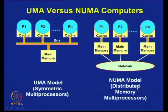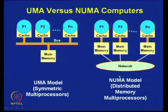On the other hand, there is another model known as the NUMA model. NUMA stands for non-uniform memory access. In this NUMA model, you have separate processors and the memory is not shared — it is distributed. Each processor has a part of the main memory associated with it, connected through a bus, and then each of them is connected to the network.